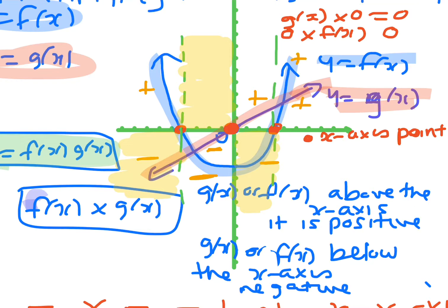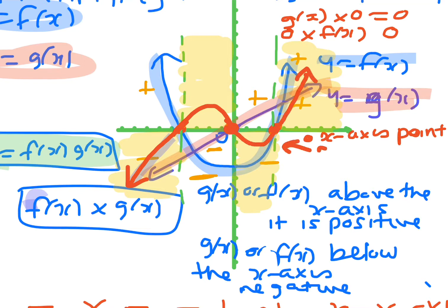In the last section you have positive times positive, which gives a positive. So when you go to draw the resulting curve — I'll draw it in red — it starts down here, goes through that dot, up here, then down in this region, back through, and up here. That curve there would be your y equals f of x times g of x.